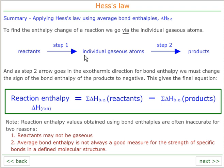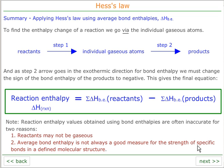Going from reactants to individual gaseous atoms involves breaking bonds — an endothermic step — and then going from individual gaseous atoms to the products involves making bonds, which is an exothermic step. It's useful to remember that there are limitations when using bond enthalpies: the reactants or products may not always be gaseous, and also average bond enthalpy is not necessarily a good measure for the strength of specific bonds in a specific molecule.